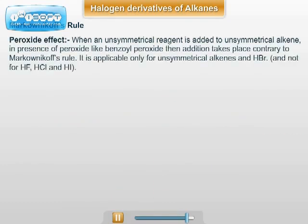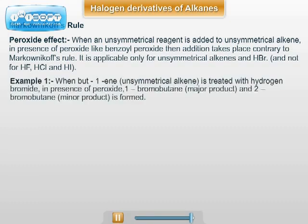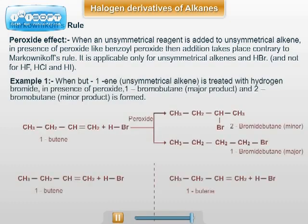In the preparation of alkyl halides using an unsymmetrical alkene and unsymmetrical reagent, if the reaction is carried out in the presence of peroxide, then the addition takes place exactly opposite to Markovnikov's rule. This is known as the Kharasch effect, or anti-Markovnikov addition. For example, but-1-ene reacts with HBr in the presence of peroxide, and 1-bromobutane is formed as the major product while 2-bromobutane is the minor product.